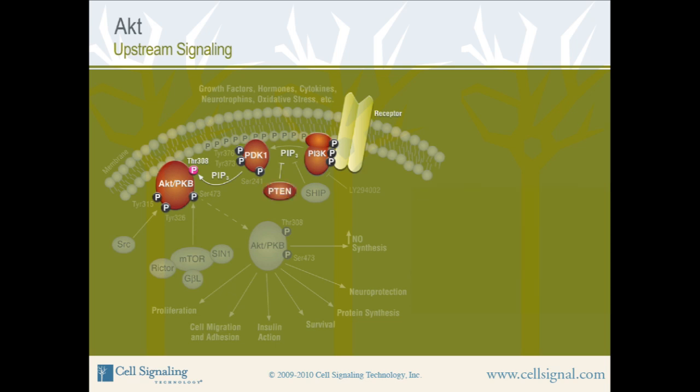PTEN is a phosphatase that converts PIP3 back to PIP2. Therefore, PTEN inactivates AKT and serves as an off switch for the signaling pathway. Loss of PTEN results in constitutive activation of AKT and is often seen in human cancers, an example of which will be shown later in this tutorial.